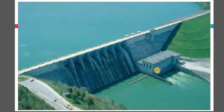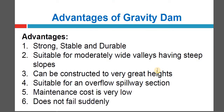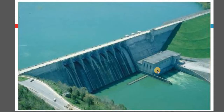The advantages of gravity dam: it is strong, stable, and durable. It is suitable for moderately wide valleys having steep slopes. It can be constructed to very great heights and is suitable for overflow spillway action. When the dam structure itself allows water to flow over its crest, it is considered an overflow type of spillway. You can see one dam present here where that length of the dam structure allows water to flow over it — therefore it is called an overflow type of structure.